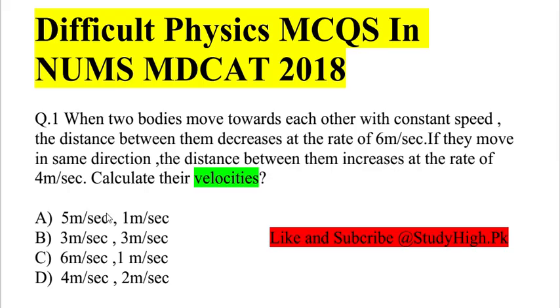You can also solve this with common sense. If the distance increases at 4 meters per second when moving in the same direction, then V1 minus V2 equals 4. If V1 is 5 and V2 is 1, this satisfies both conditions.